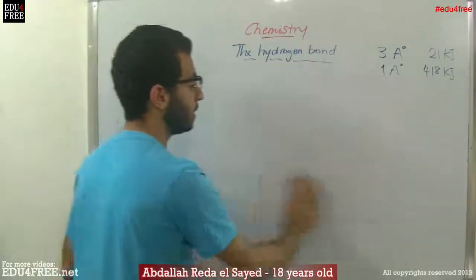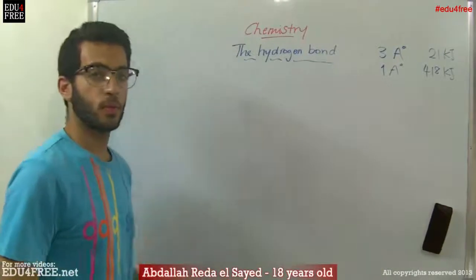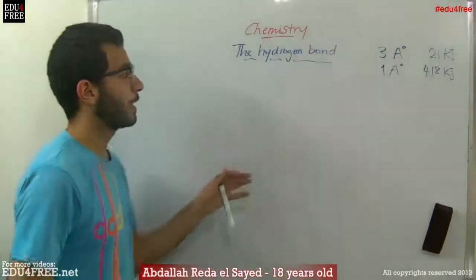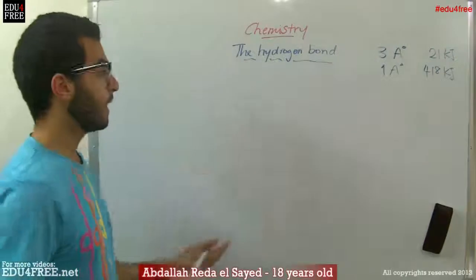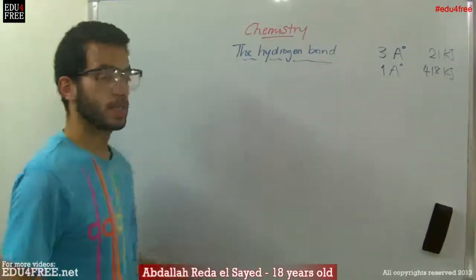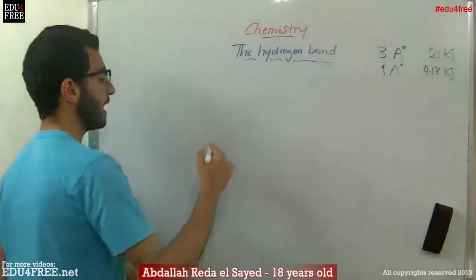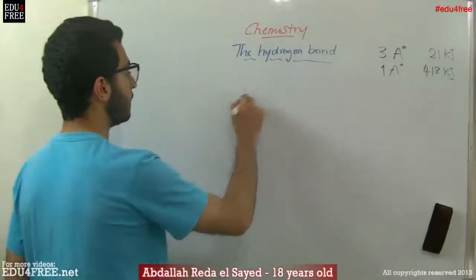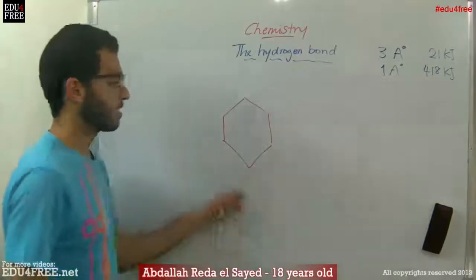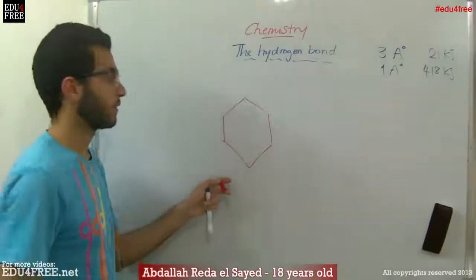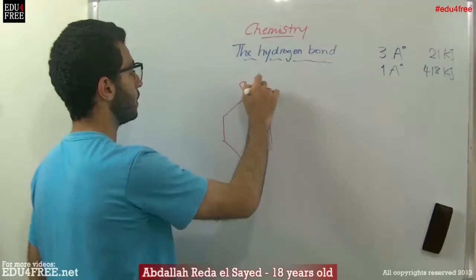The last thing we need to know is that there are two types of hydrogen bonds. We said that hydrogen bonds mainly form between molecules, but sometimes they are formed inside a molecule. That's the case when we have a ring compound like cyclohexane, for example.